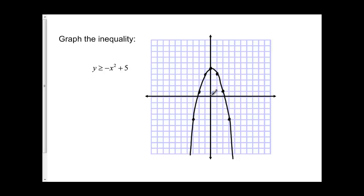And again, I'm going to pick a test point of 0, 0. So if I substitute in, 0 is greater than or equal to negative 0 squared plus 5, I get 0 is greater than or equal to 5. Again, this is not true.